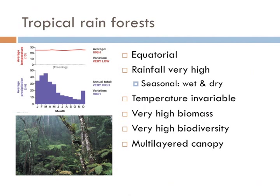Tropical rainforests all occur very near the equator, where the temperature is always hot and hardly ever changes — it's hot all the time. What does change is the amount of precipitation; in many tropical rainforests there are two seasons: the rainy season and the dry season. Tropical rainforests are the biomes that have the most biomass and the highest biodiversity. They're also characteristically multi-layered, with two, three, or even four layers of trees. Light is abundant at the very topmost layer, while at the floor, light is all but non-existent.